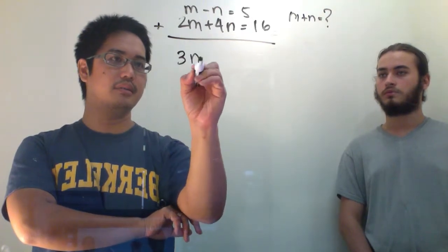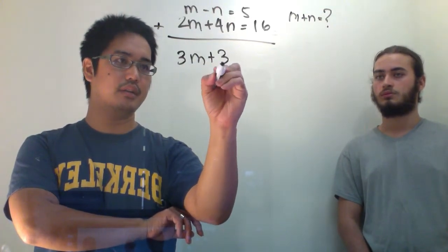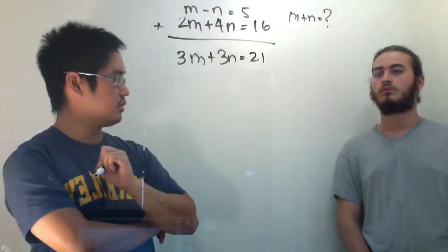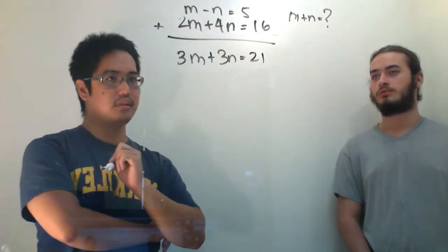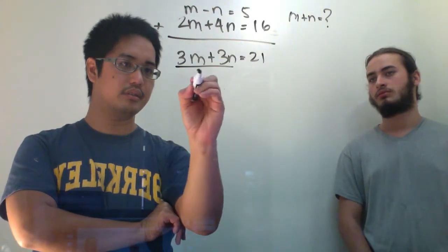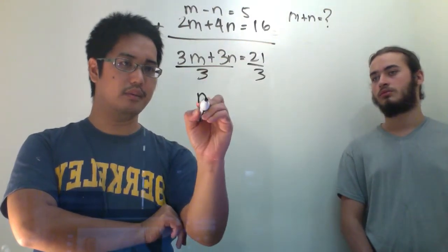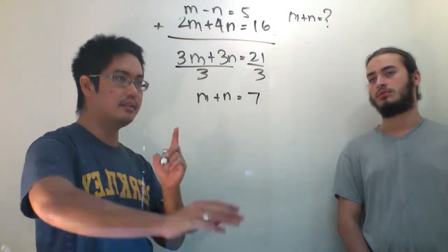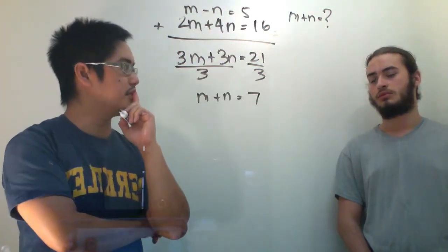That gives me 3m plus 3n equals 21. Cool? I'm going to divide it by 3. I get m plus n equals 7. Hey, I solved exactly what they wanted me to solve anyway.